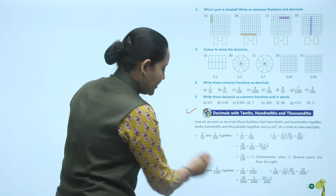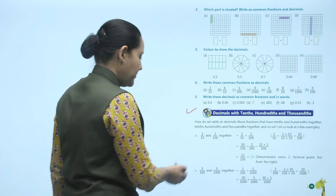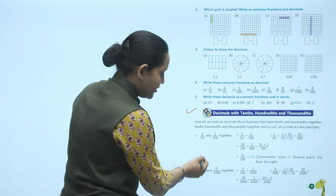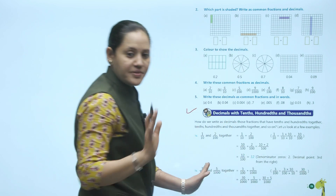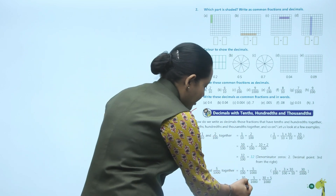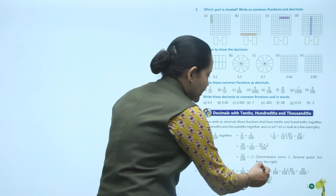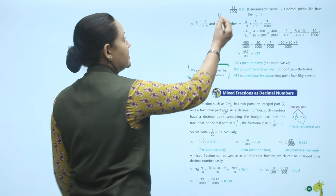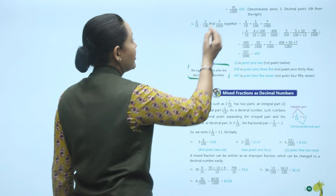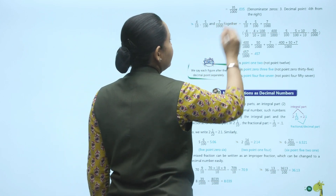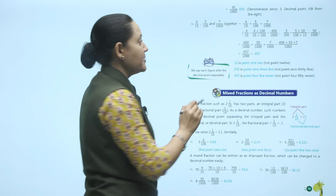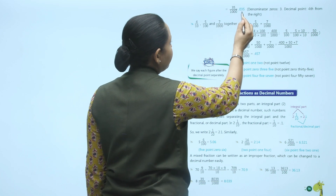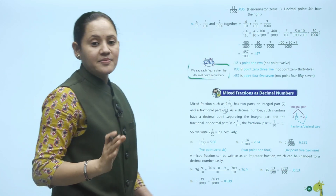Next: 3 upon 100 and 5 upon 1000 together. Make the denominators the same — multiply 3 upon 100 by 10 to get 30 upon 1000. Then 30 upon 1000 plus 5 upon 1000 equals 35 upon 1000. To write 35 upon 1000 as a decimal: three zeros in denominator, position is 3 plus 1 equals 4 from the right, giving 0.035.